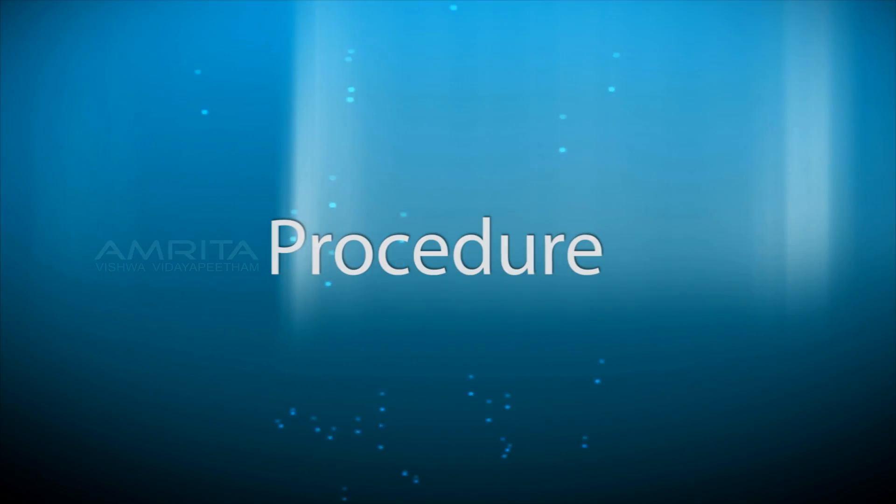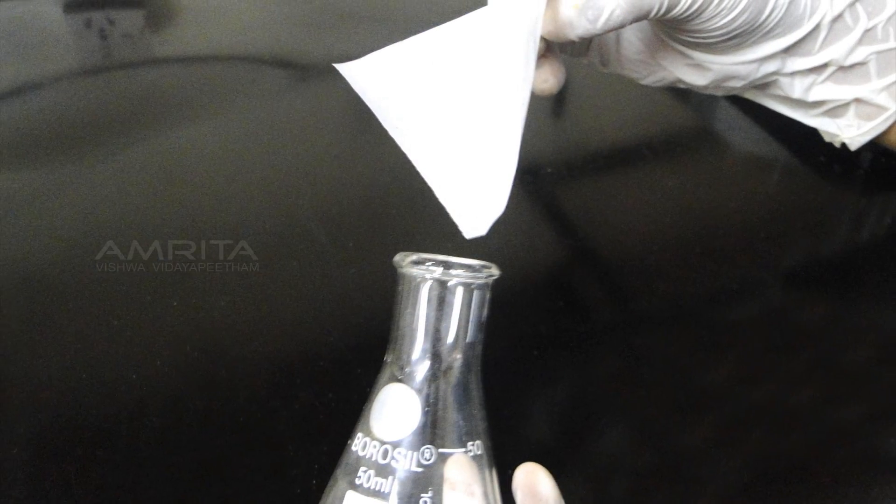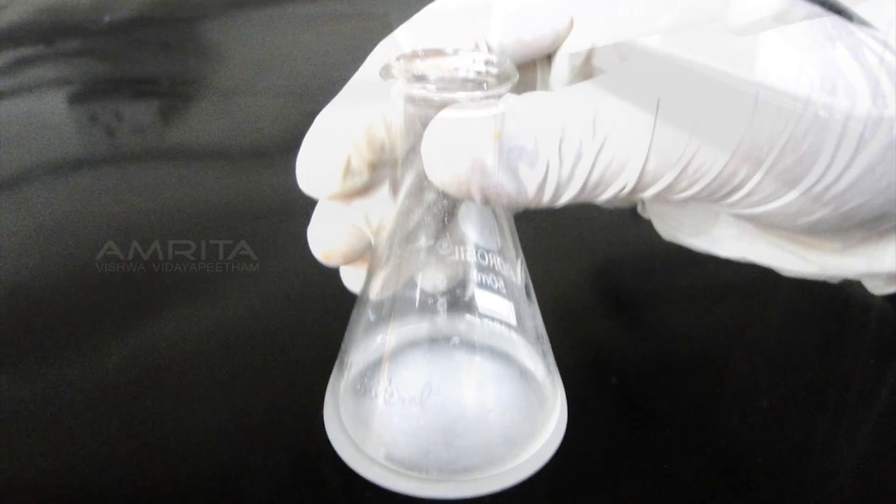Procedure: Boil to dissolve 0.1 g of agarose in 10 mL of 1x assay buffer. Cool to 55 degrees Celsius.